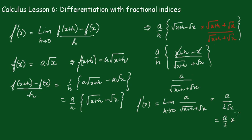As h goes to zero this gives a over 2√x, which is a times x to the negative half. Recall that f(x) equals a·x^(1/2), and the rule gives us half coming down, and a minus half in the index — confirming the power rule result.